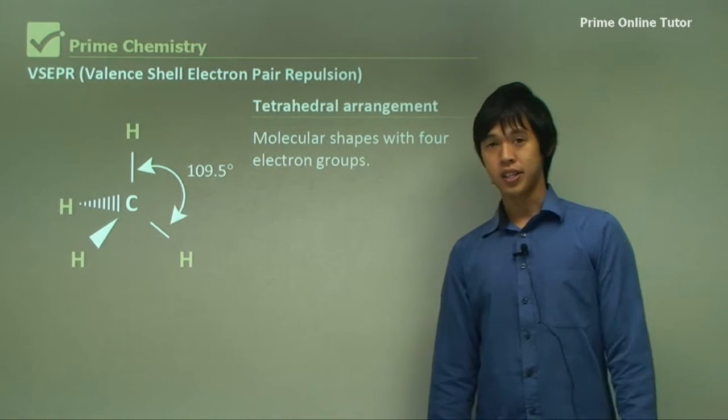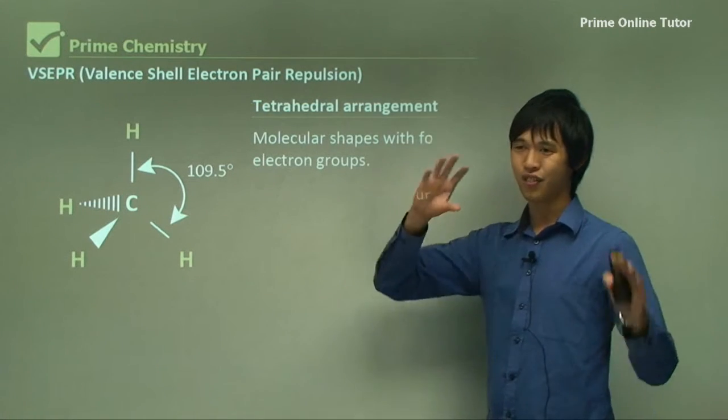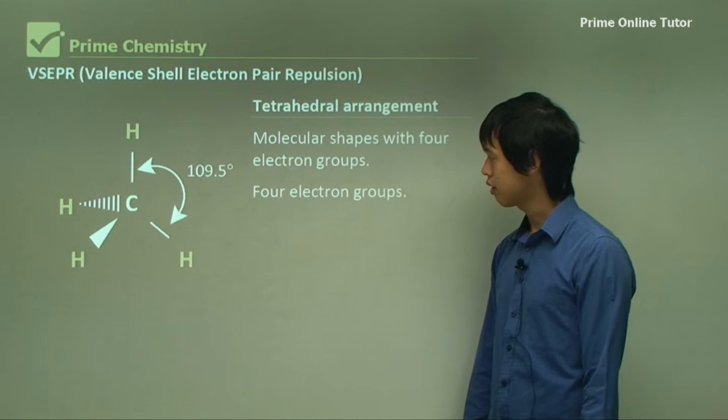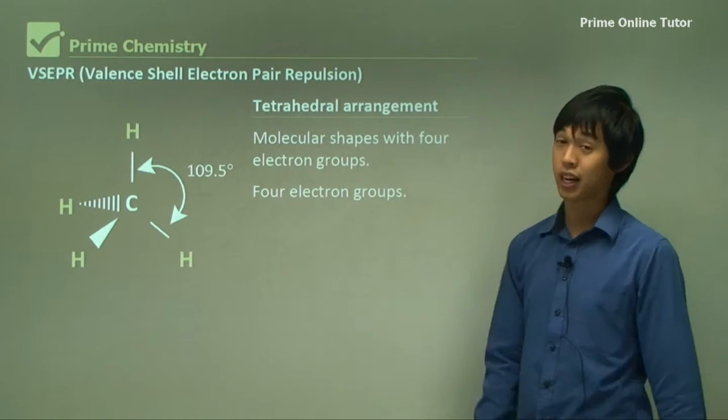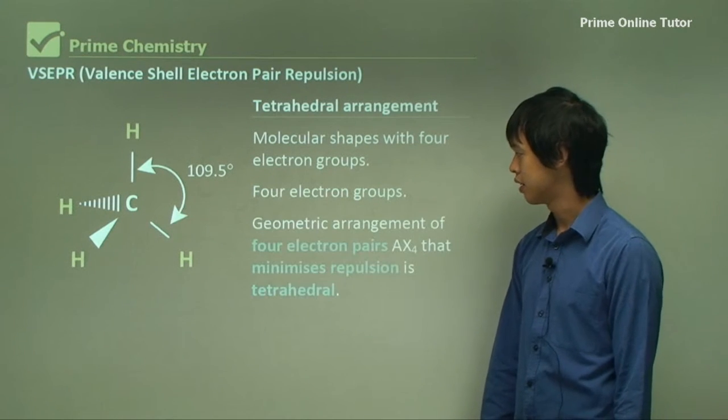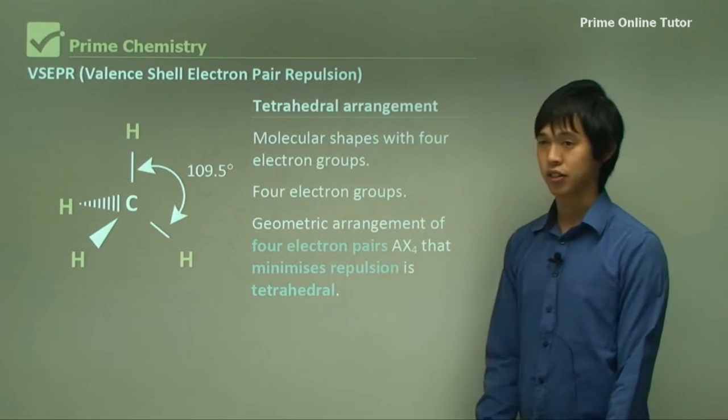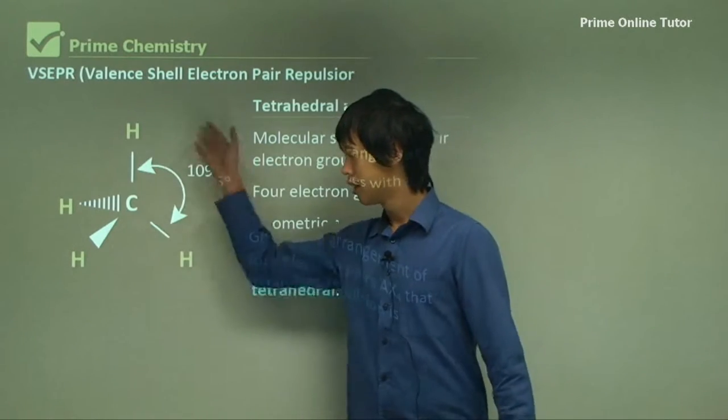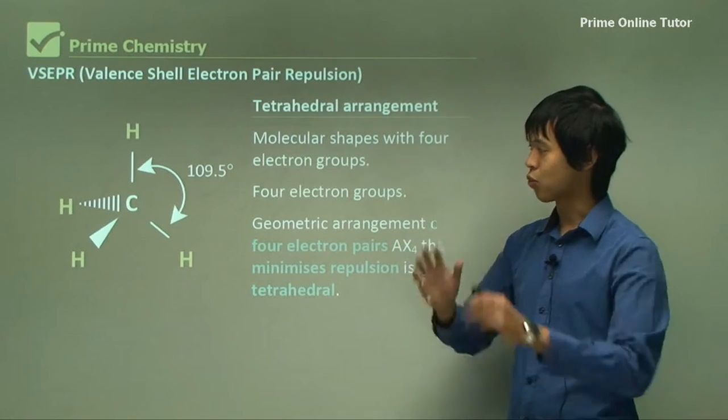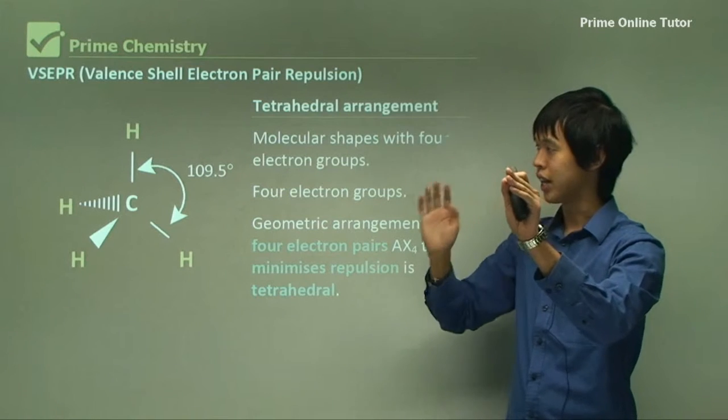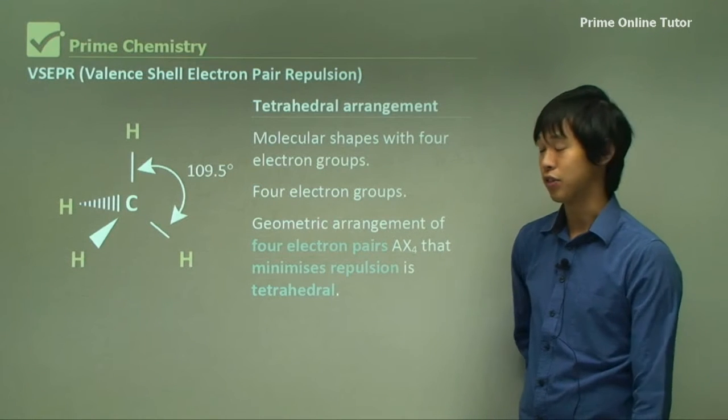The tetrahedral arrangement is slightly more complex. So it's a molecular shape with four electron groups, so you've got four electron pairs. So you've got one, two, three, four electron pairs. And they're all separated by 109.5 degrees. So the geometric arrangement of four electron pairs, AX4, that minimizes repulsion is tetrahedral. So in this case, you've got methane, so C, and then four H's all surrounding it. So it's actually three-dimensional. So one hydrogen would be coming out towards you, and then there'd be three in the same plane behind it. So that forms the tetrahedral shape.